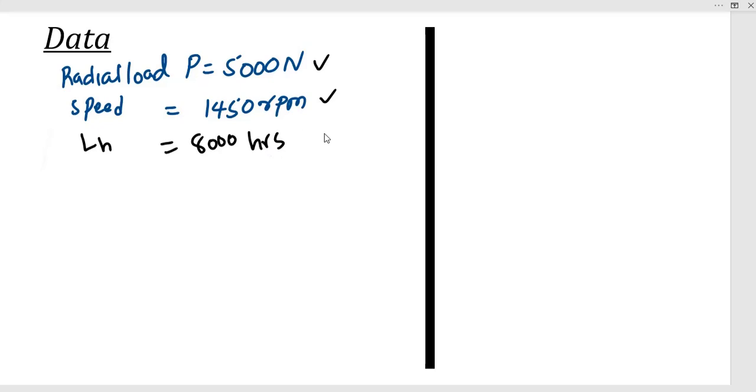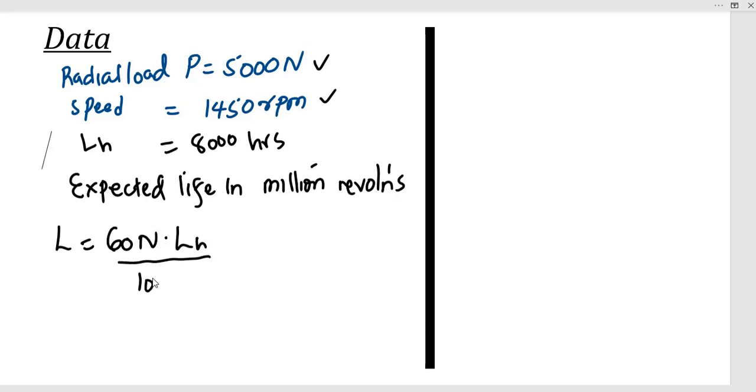Then we need to go ahead and calculate the expected life in million revolutions. This is defined by L = 60 × N × Lh divided by 10^6, because we are converting it to million revolutions.